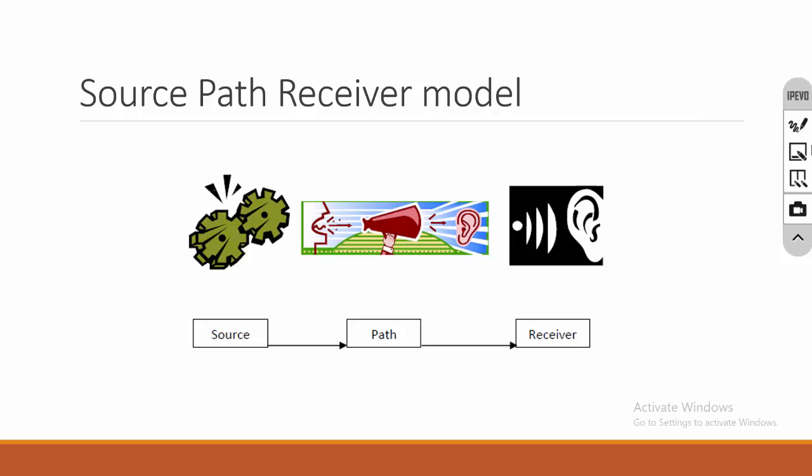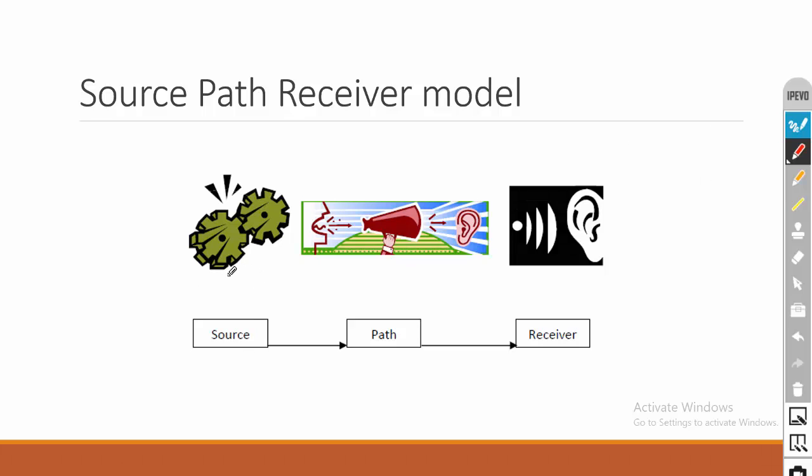We can use control strategies at the source, path, or receiver. Let us imagine a machine fitted on a floor, vibrating with heavy amplitude. I am going to identify the fault in the machine and control the vibration. For example, if the machine has a heavy unbalanced force, I am going to add some trial masses and do the process of field balancing.